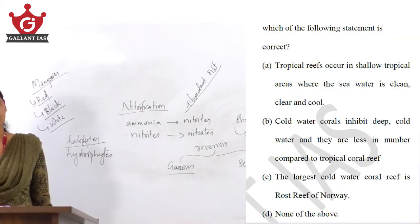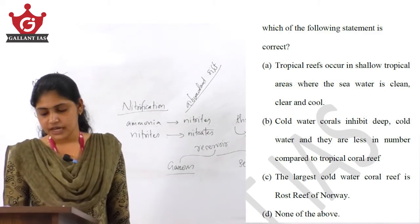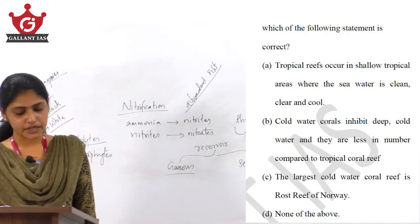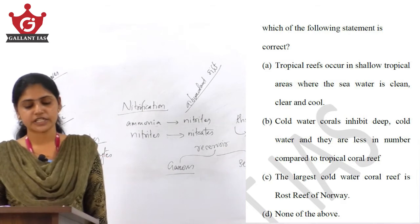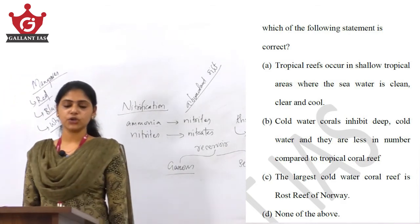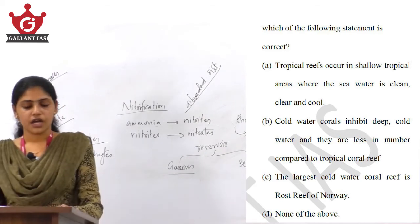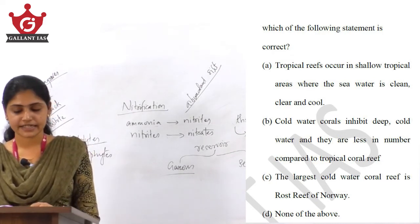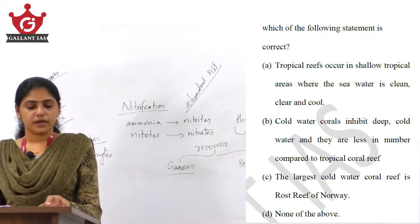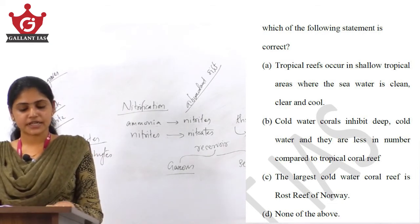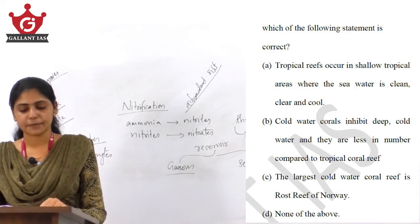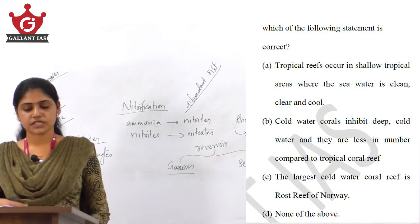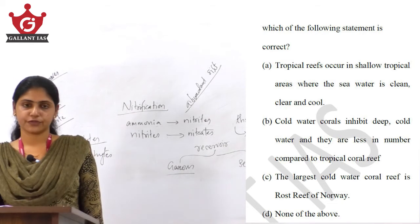Question 12: with reference to the coral reef system, which of the following statements is correct? Option A: tropical reefs occur in shallow tropical areas where the sea water is clean, clear, and cool. Option B: cold water corals inhabit deep cold water and are less in number compared to tropical coral reefs. Option C: the largest cold water coral reef is Rost reef of Norway. Option D: none of the above.